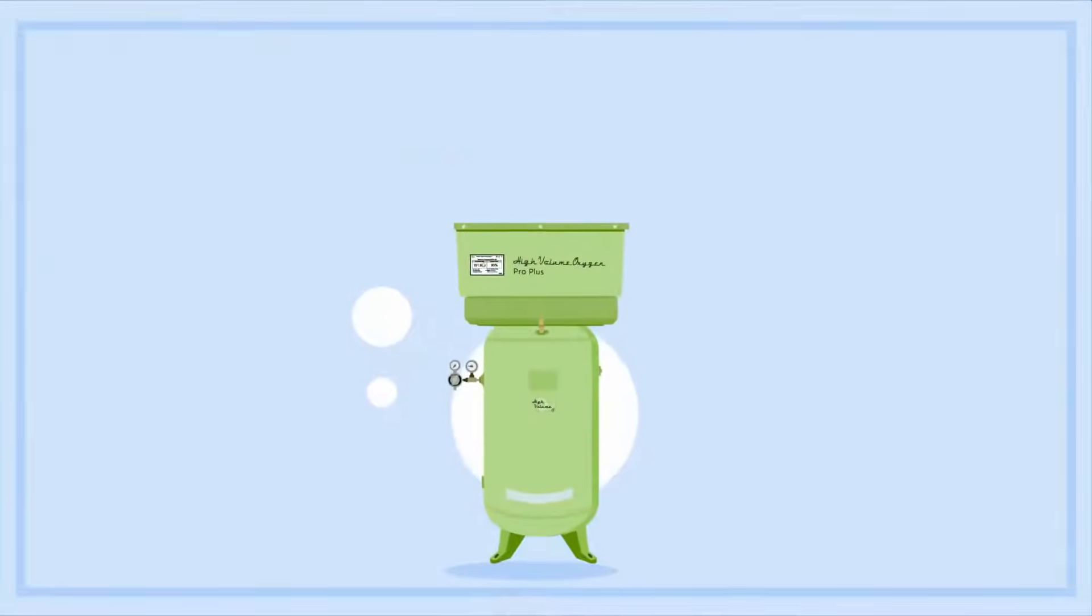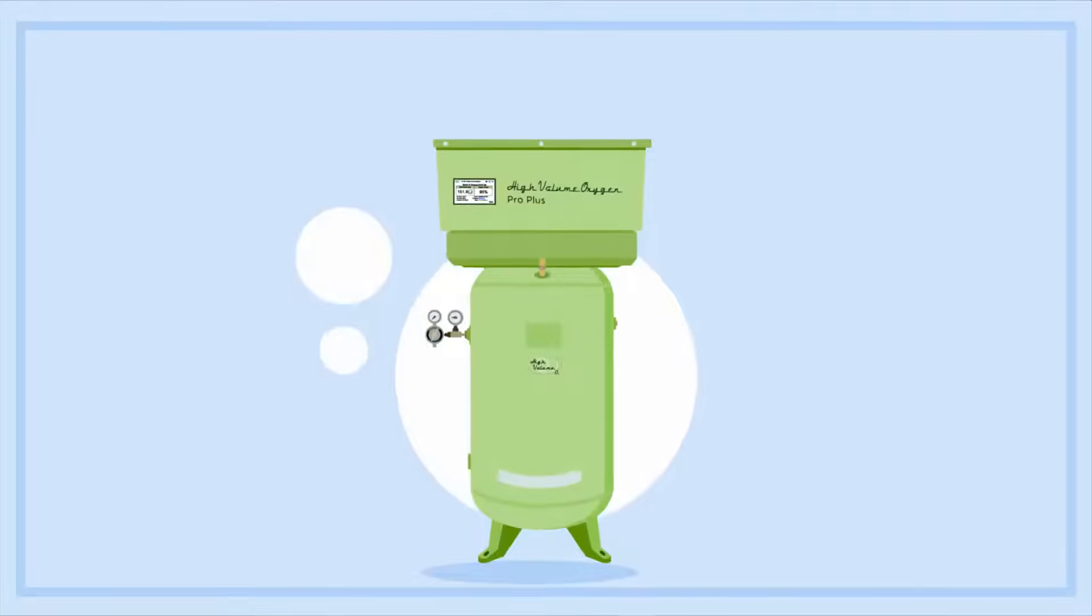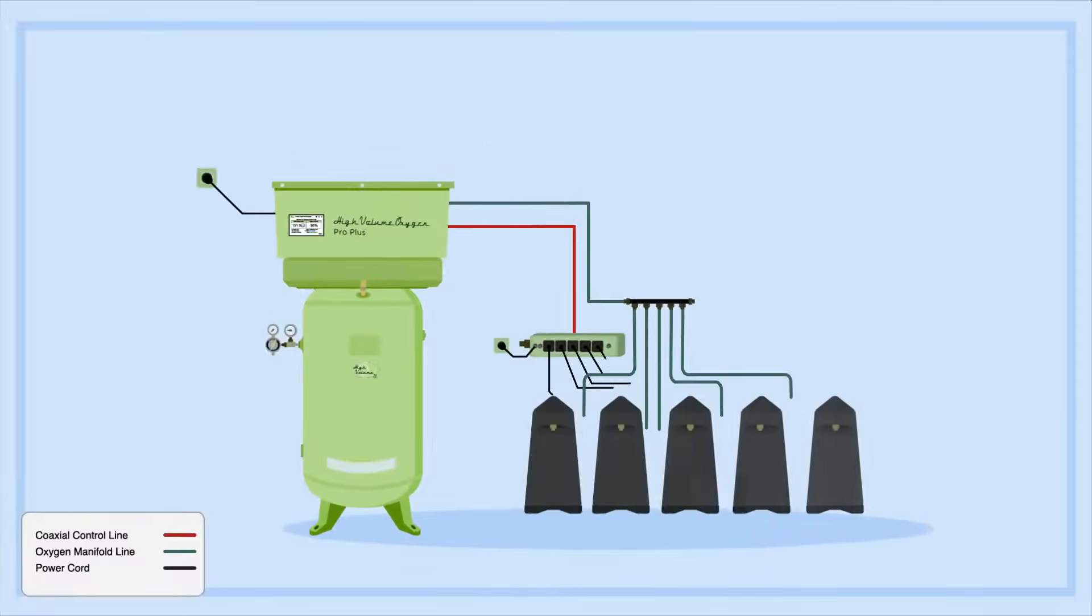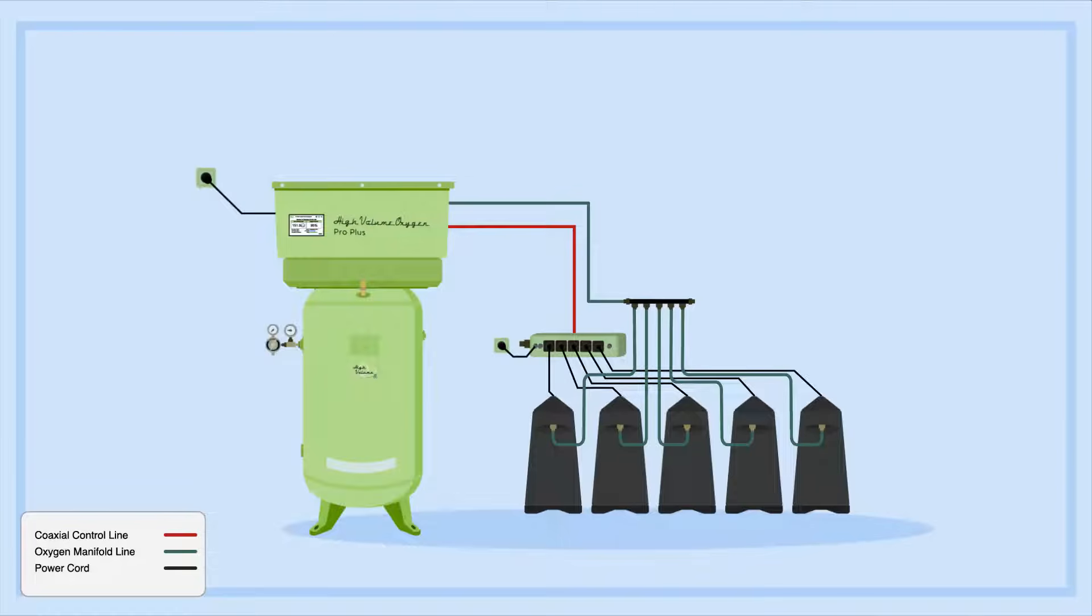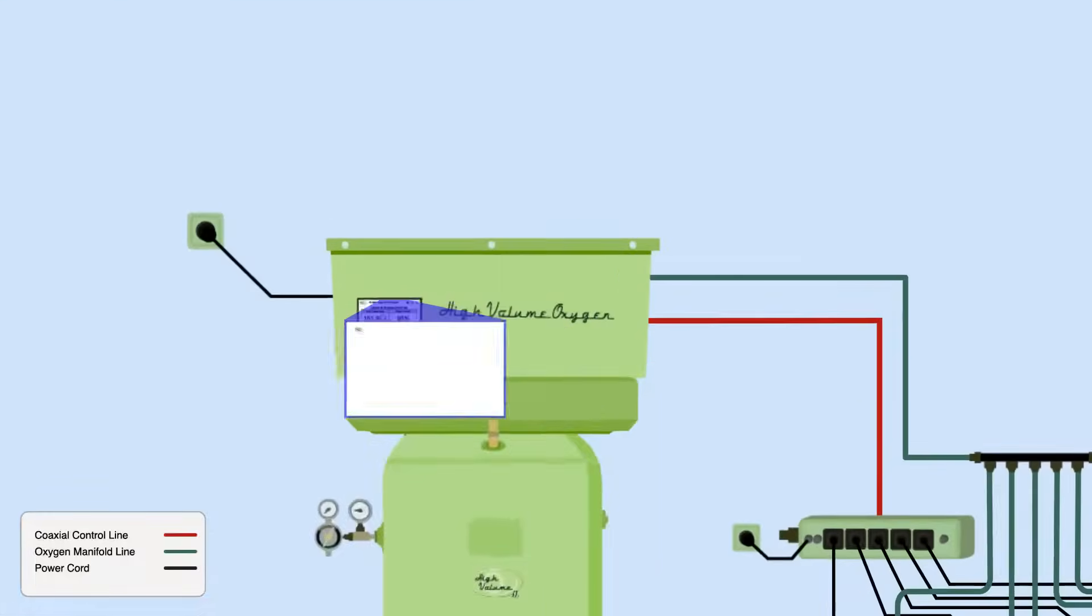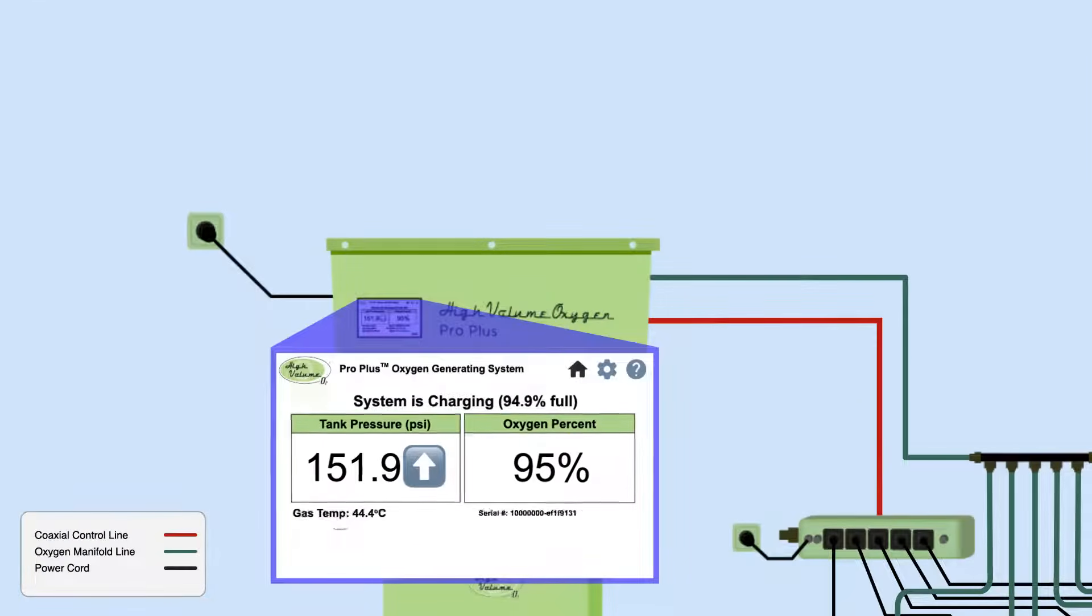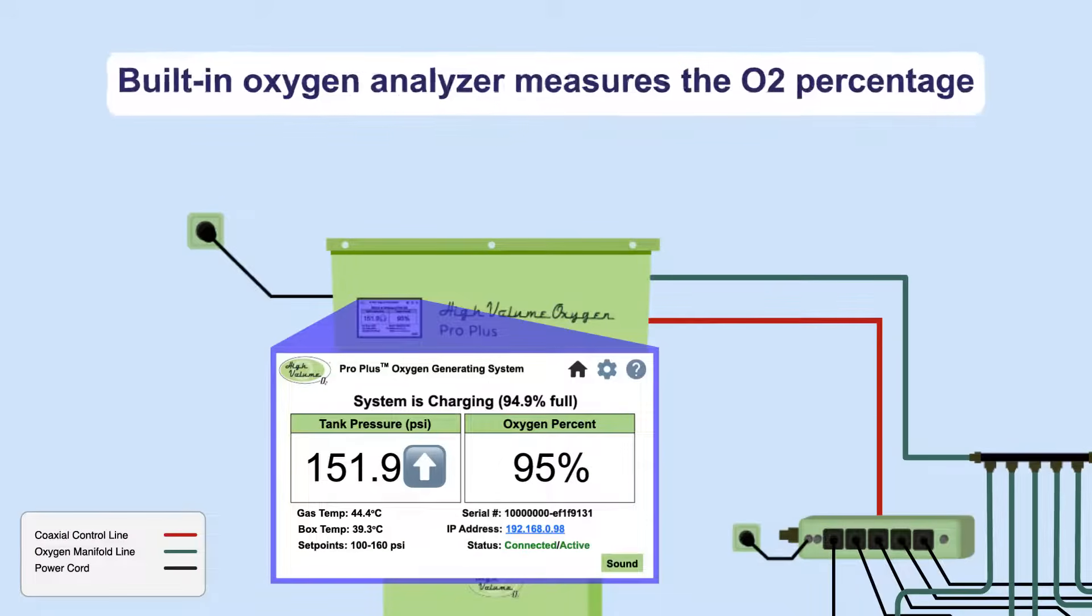The HVO system leverages the combined output of multiple low-cost oxygen concentrators to generate oxygen with a concentration up to 95%. To create a central oxygen-generating resource at your clinic, the accumulated oxygen is pressurized, stored, and monitored.